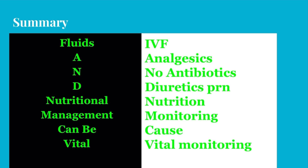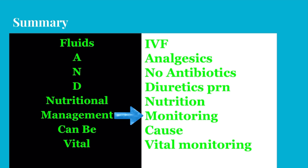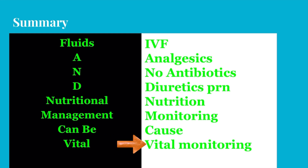To summarize the treatment of acute pancreatitis using the mnemonic: F — IV fluids, Ringer's lactate preferred, moderate not aggressive hydration. A — analgesics, mostly IV opioids. N — no antibiotics, with a few exceptions. D — diuretics only if fluid overload. Nutritional — oral, enteral, or parenteral nutrition. Management — monitor serum electrolytes and blood glucose. CAN — manage the underlying cause. Vital — monitor vitals including oxygen saturation, heart rate, and mean arterial pressure. Thank you for watching.